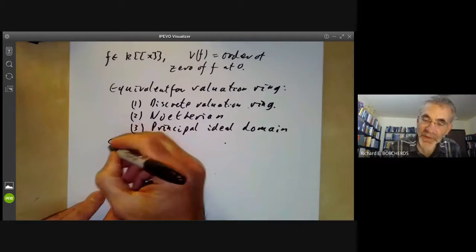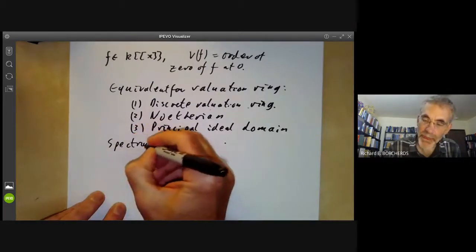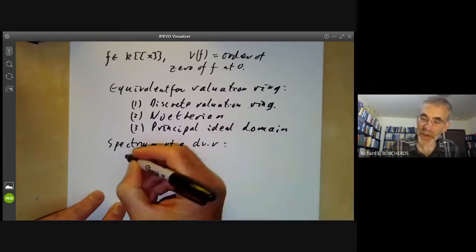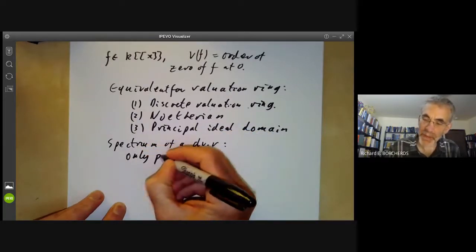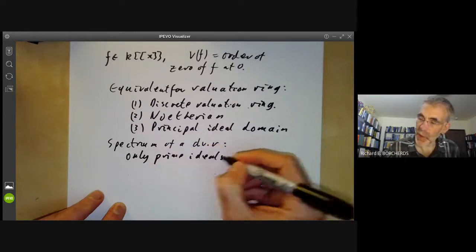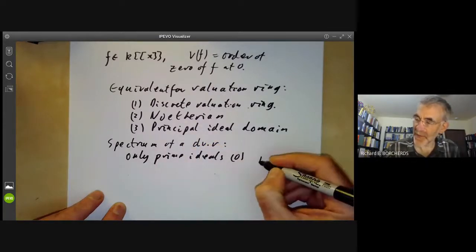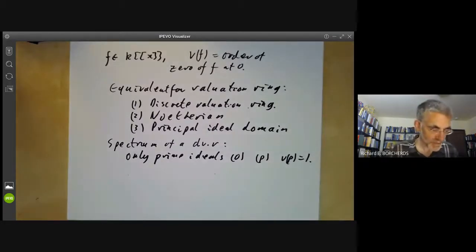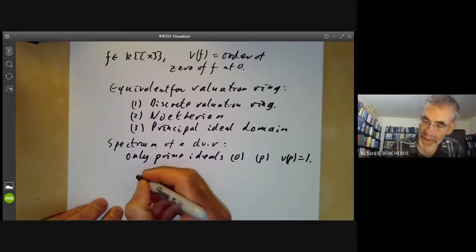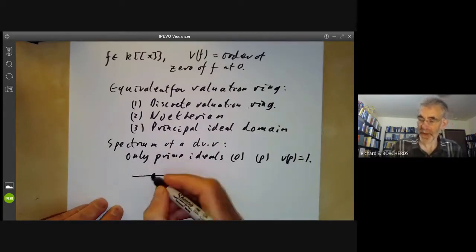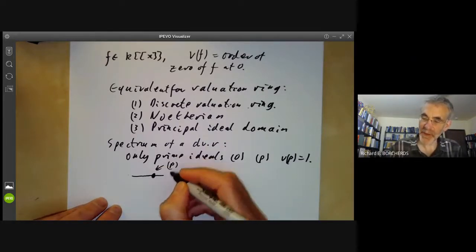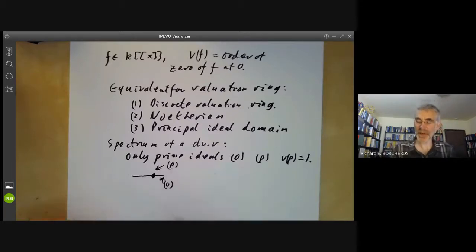The spectrum of a discrete valuation ring is very easy because the only prime ideals are 0 and P, where the valuation of P is equal to 1. So its spectrum looks like this. It's got one closed point, which is the ideal P, and it's got one generic point, which is the ideal 0.